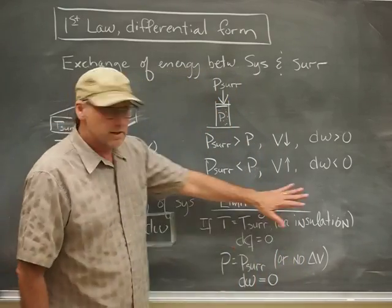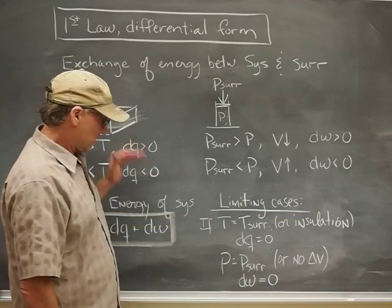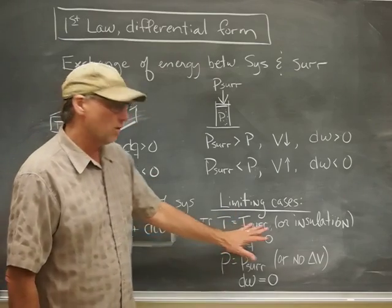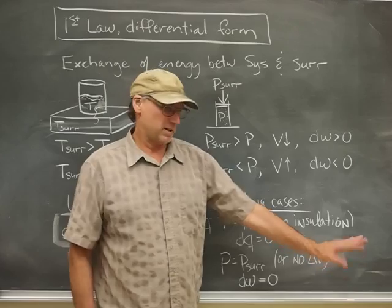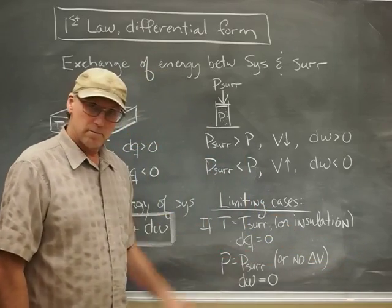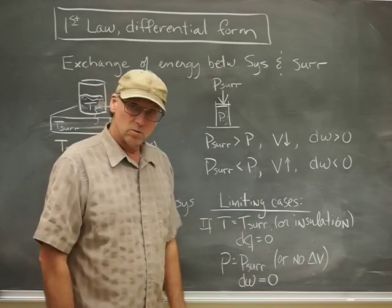And then one can think about a few limiting cases here. We've talked about temperature being greater than or less than the system and the surroundings. But what if they're equal? Or what if the temperatures are different, but there's an insulator between them? Either way, no heat is going to pass from system to surroundings, so DQ will be zero.